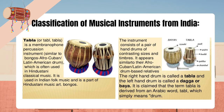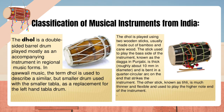The Tabla consists of a pair of hand drums of contrasting sizes and timbres. The right-hand drum is called a tabla and the left-hand drum is called a daga or baya. The term tabla is derived from an Arabic word tablu, which simply means drum. The dal is a double-sided barrel drum played mostly as an accompanying instrument in regional music forms. In Qawwali music, the term dal is used to describe a similar but smaller drum used with the smaller tabla as a replacement for the left-hand tabla drum. The dal is played using two wooden sticks, usually made out of bamboo and cane wood.